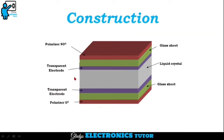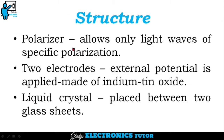This is the construction of a liquid crystal display. It consists of two polarizers, two transparent electrodes, two glass sheets, and liquid crystal placed between the glass sheets. A polarizer is a filter that allows only light waves of specific polarizations and blocks others. The electrodes, through which external potential is applied, are made of indium tin oxide.